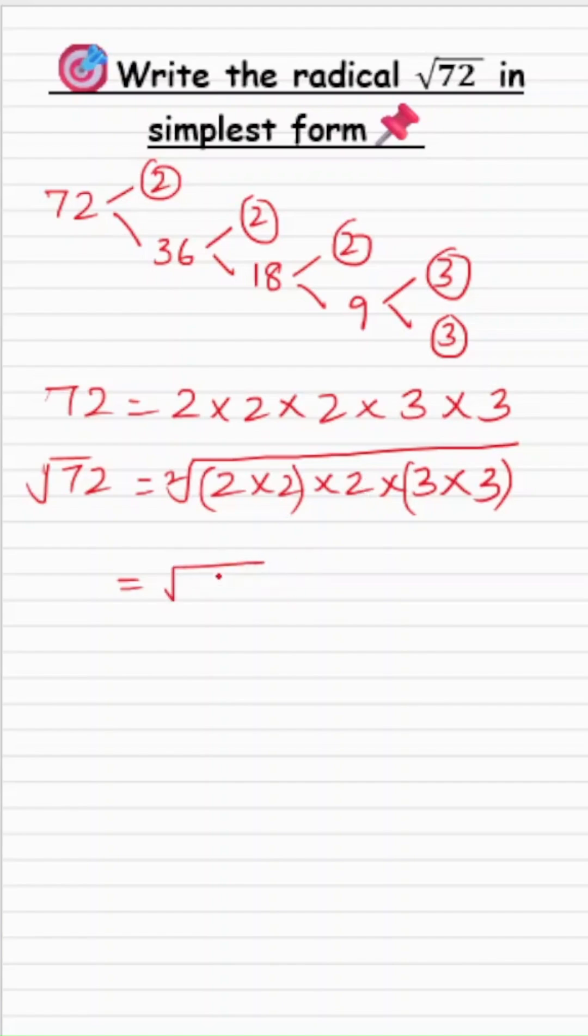So, I get square root of 2 times 2 times square root of 2 and square root of 3 times 3. So, for this square root, I will write one number 2. This is left alone. So, this is just square root of 2 times. For this square root of 3 times 3, I will write just one 3. So, I get 2 times 3, 6, 6 square root of 2 as the simplest form of this square root of 72. That's all.